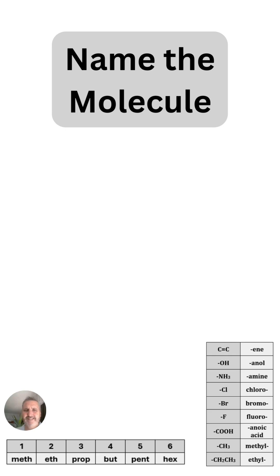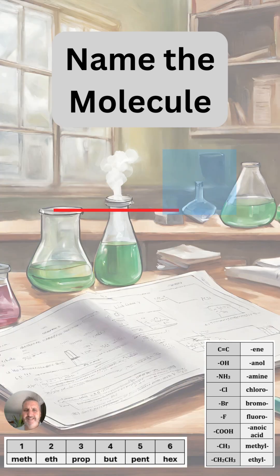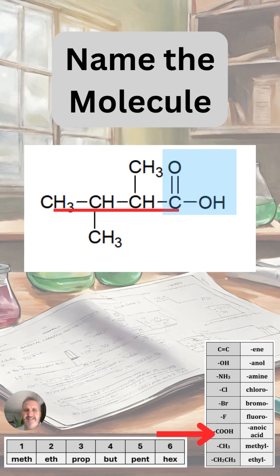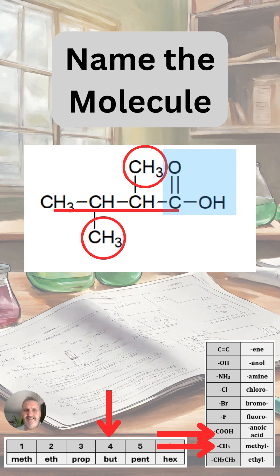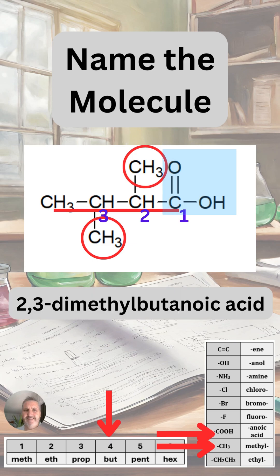Let's see if we can name this molecule. Let's identify the functional group on the right: the carbon double bond oxygen also has an OH joined to it, so in total this is a carboxylic acid functional group — it's going to have the ending '-anoic acid'. There are four carbons in the longest chain, so it's going to be butanoic acid. We have two methyl groups coming off carbon number two and carbon number three. We start numbering from the carboxylic acid side because it is the most important functional group. So the name here is 2,3-dimethylbutanoic acid.